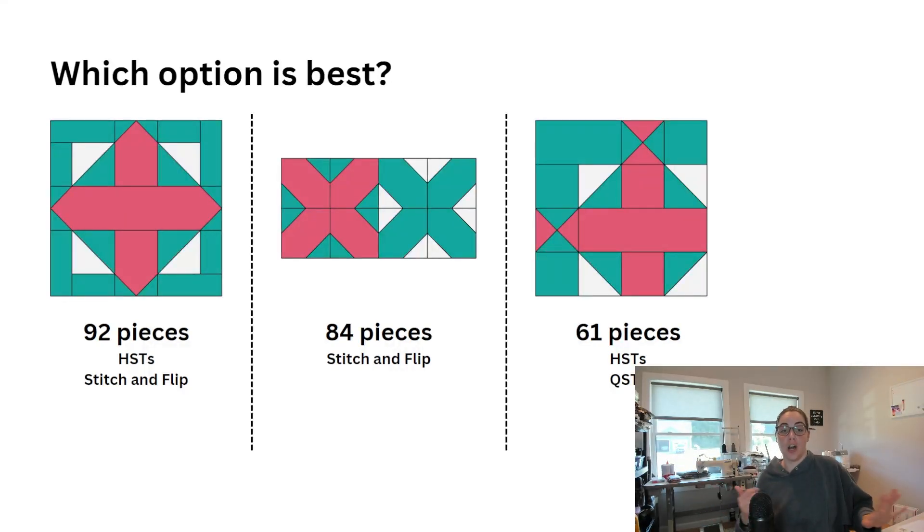The third thing that I consider are techniques that I hate. If there's a particular technique that I just really don't like doing, like some people really hate HSTs, don't pick a construction option that's going to require you to use that technique. Because if you hate it, you're not going to enjoy making your cover quilt. And then it's going to be harder for you to promote it and be really super excited about your pattern. And that's going to translate to your customers, right? If you hate it, they're going to hate it too. So don't pick construction methods with a technique you hate. Just avoid it. Pick something else.